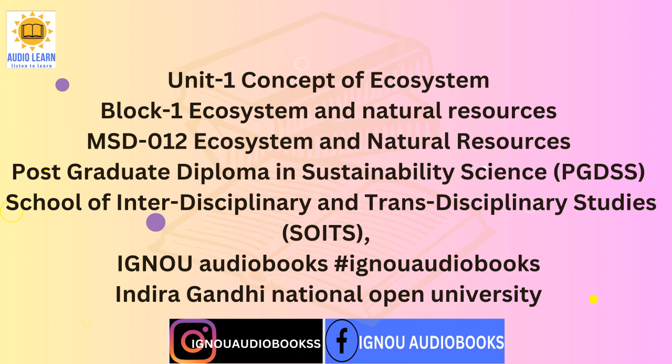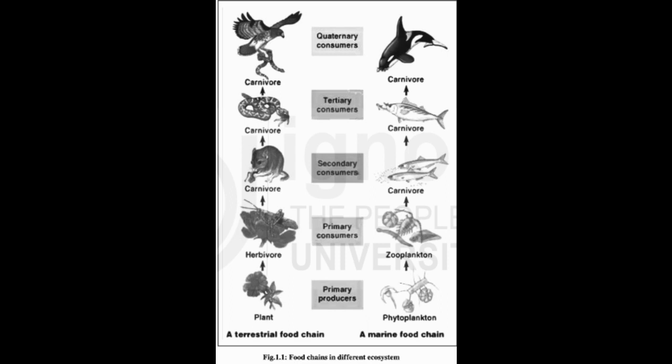In terrestrial ecosystems, autotrophs are mainly the rooted plants. In aquatic ecosystems, floating plants called phytoplankton and shallow-water-rooted plants called macrophytes are the dominant producers. Heterotrophs (Greek: heteros = other, trophos = feeder) are also called consumers, which are generally animals feeding on other organisms. Consumers, also referred to as phagotrophs or macro-consumers, are mainly herbivores and carnivores.